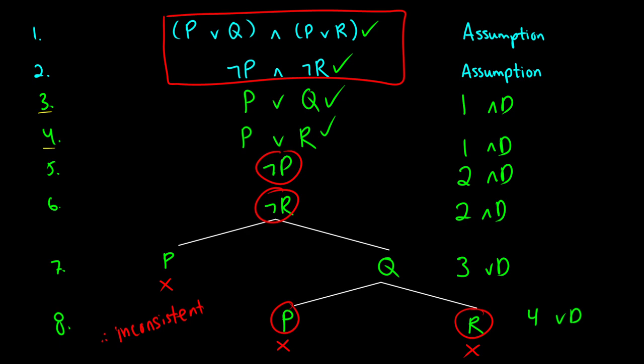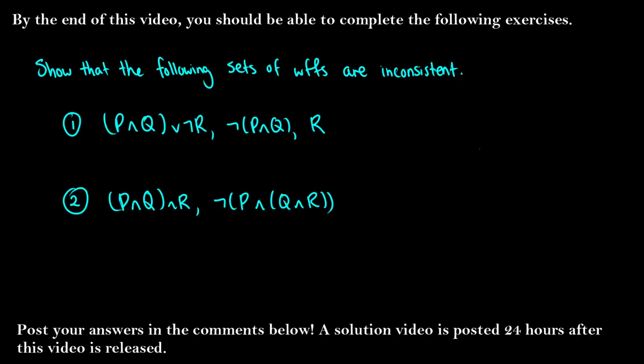That's it for this video on truth trees for and, or, and not. I want you to try some practice problems on your own — do a truth tree for the given set of three well-formed formulas, and then for the set of two. I'll have a solution video posted within 24 hours. If you have any comments or questions, post them in the comments below.